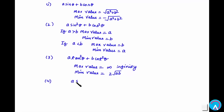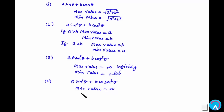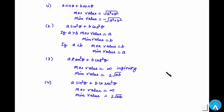The fourth expression is a·sec²θ + b·csc²θ. Once again, the maximum value for this function is infinity, but there is a minimum value, which is 2√(ab).